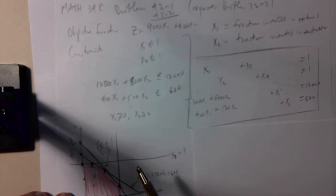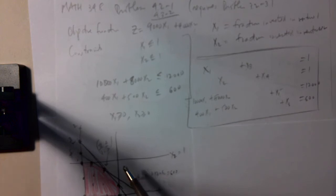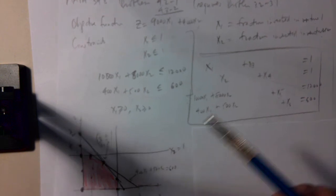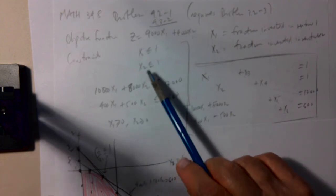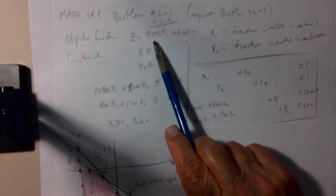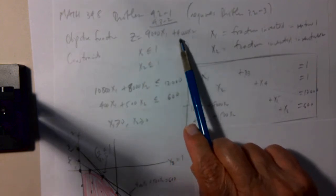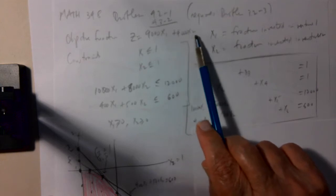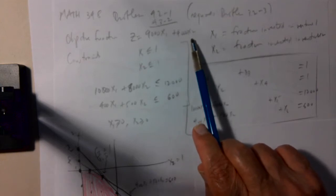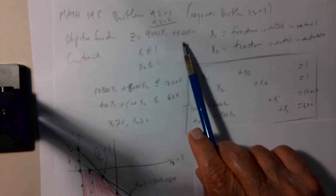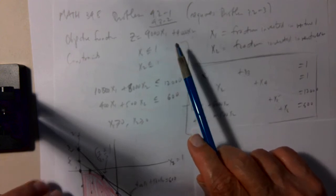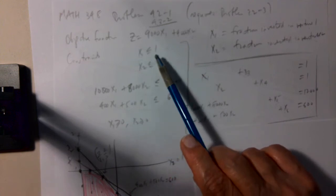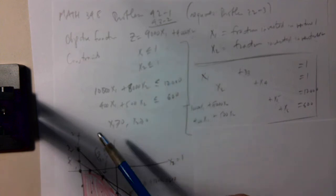So originally when we saw this problem, we converted the text into linear programming. We had an objective function to maximize 9,000X1 plus 9,000X2. X1 and X2 were fractions of businesses that the protagonist could invest in, and we had four constraints.